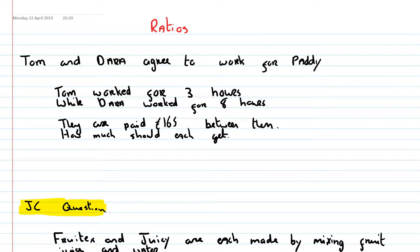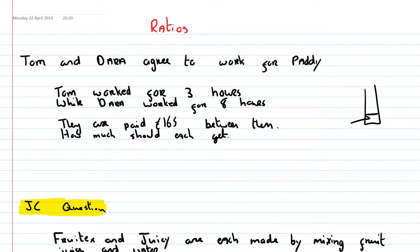In this video we're going to look at ratios. When you think of ratios, think of a dilute orange or something like that. In a dilute orange, you might have this much dilute and you might have three times as much water. The ratio of dilute to water is 1 to 3. The reason for that is you have one part dilute and you have three times that amount in the water.